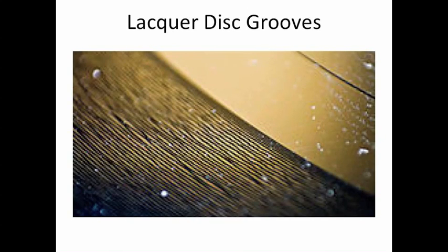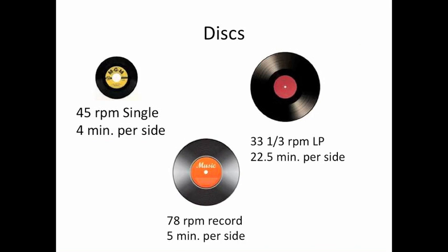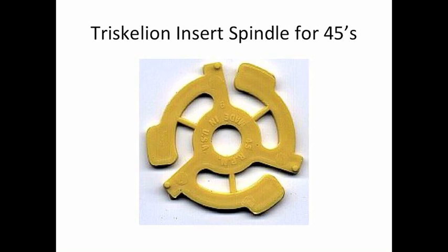Here's a good picture showing different-size discs, different sizes and different speeds. You can see the 45 has a larger hole in it — they did that to save material and then, of course, sell you one of these: the spindles. I used to have a big collection of singles, getting them for 49 cents, 59 cents, up to 69 cents for two songs, and you'd have to have the spindle or you couldn't play it.